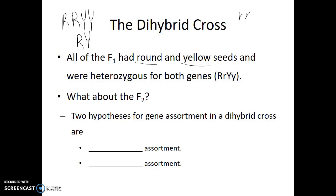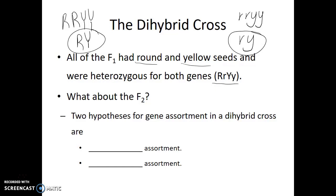The parent who was recessive for both traits — little r, little r, little y, little y — can also make only one type of gamete: little r, little y. So the F1 generation results from these two gametes fusing, and the F1 generation will be heterozygous for both genes. One convention to keep in mind: since this problem established that the R gene is listed before the Y gene, we keep that order consistent. The genotype of the F1 generation is capital R, little r, capital Y, little y — all alleles for R listed first, all alleles for Y listed second.